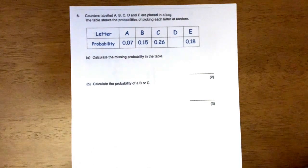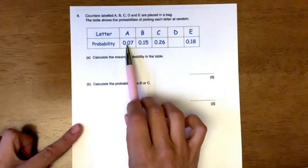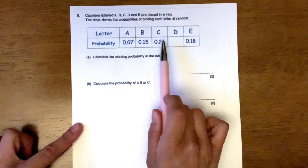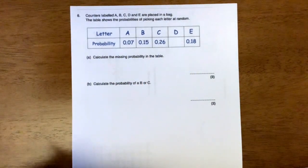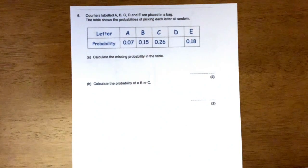So what we need to do is, it tells us the probability of picking an A, picking a B, picking a C and picking an E. We have to work out the missing probability. Now this is much easier than you think it is.